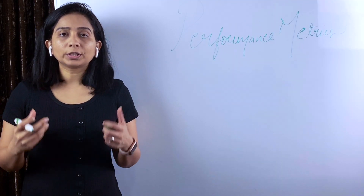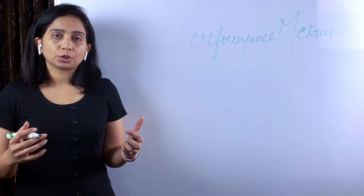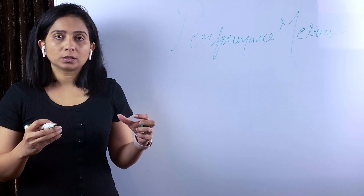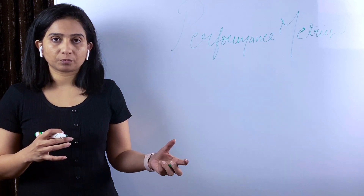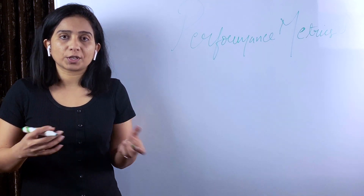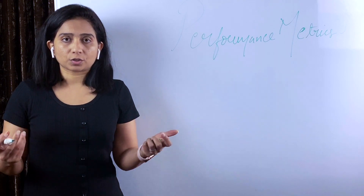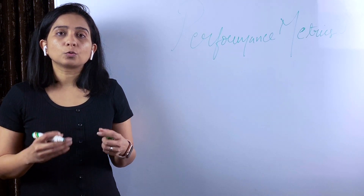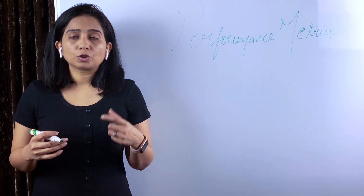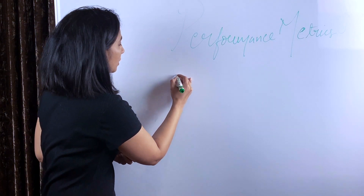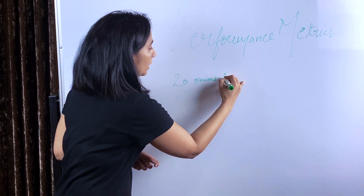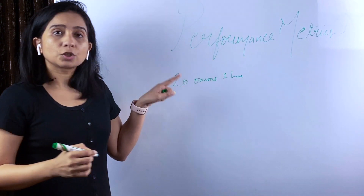Let's start with throughput. Throughput can be understood as some amount of work done in a particular time. For example, if you are an assistant to a chef in a restaurant and your task is to chop onions for that day, if you are able to chop 20 onions in one hour, this is your throughput.